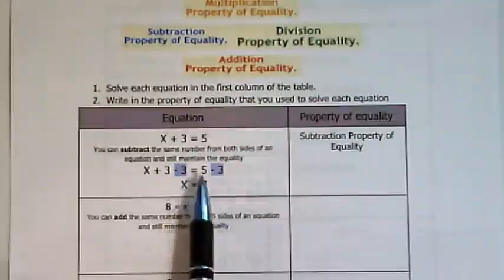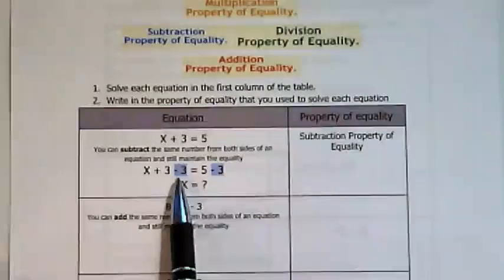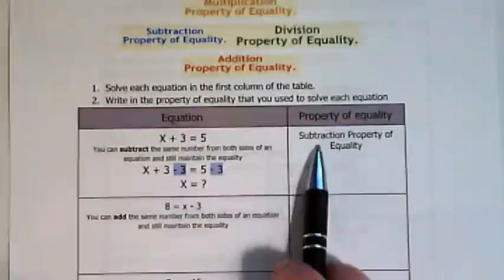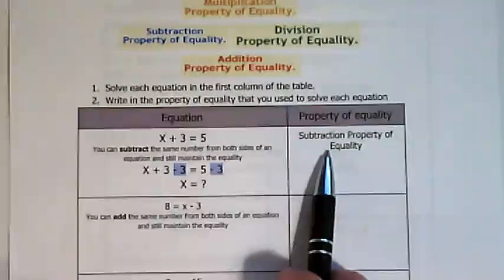So on this side, I'm seeing that 3 is being subtracted from both sides. That means that this is subtraction property of equality.